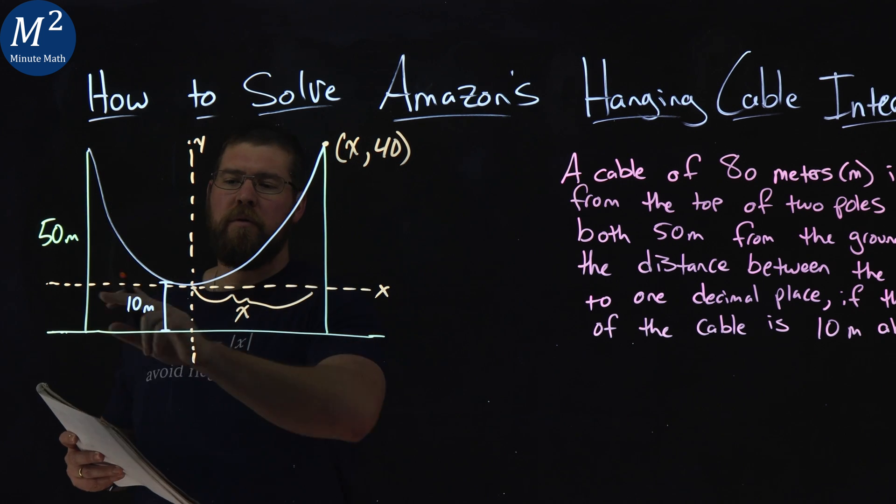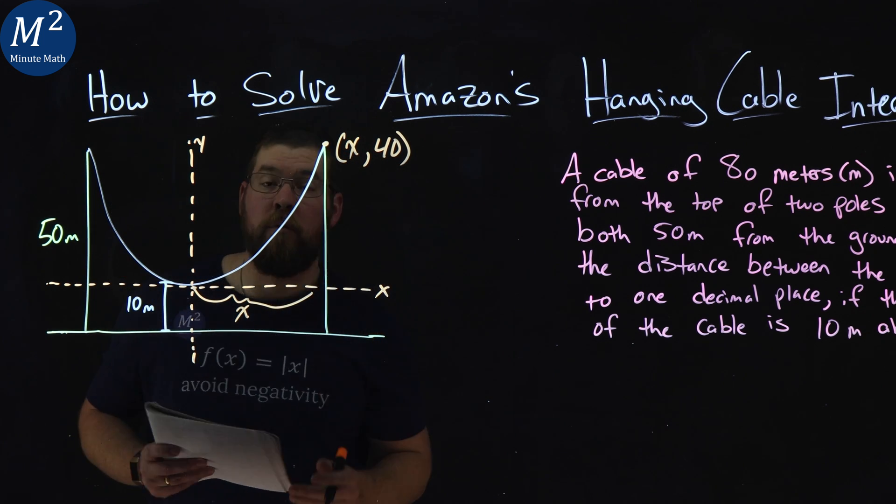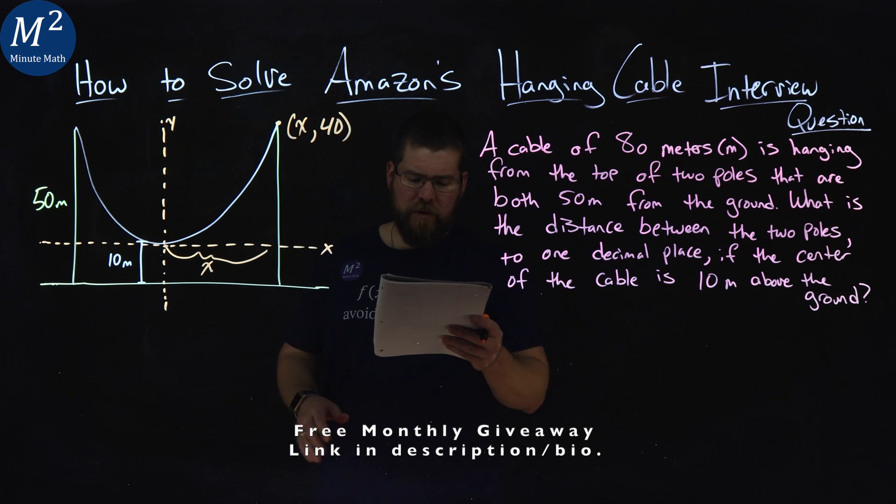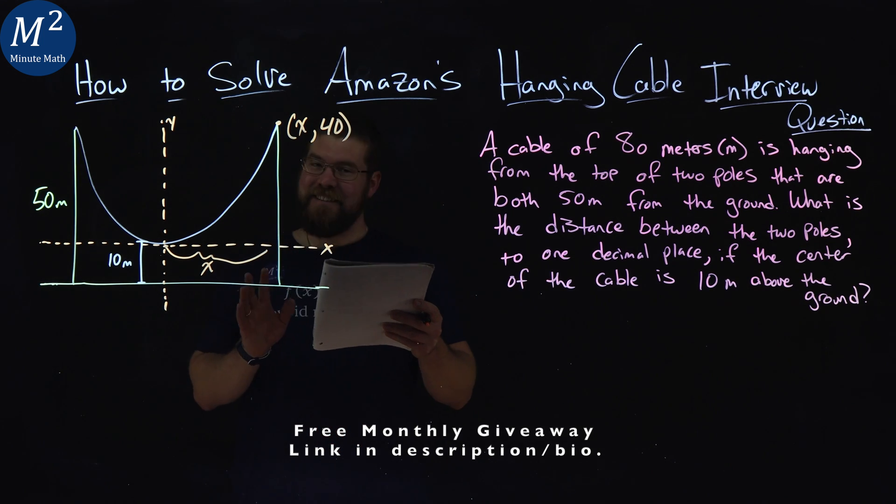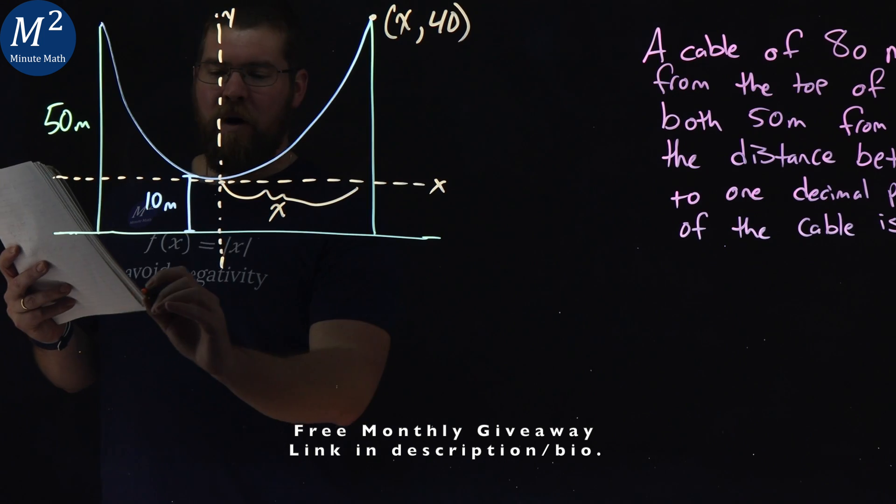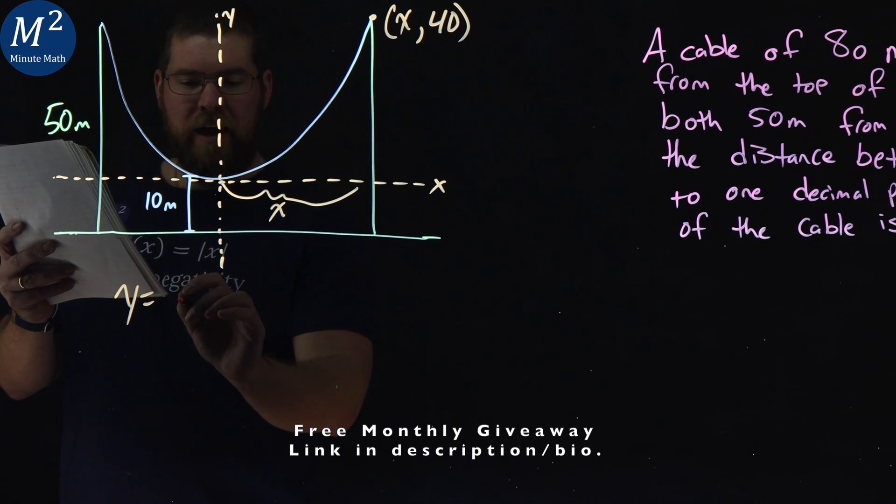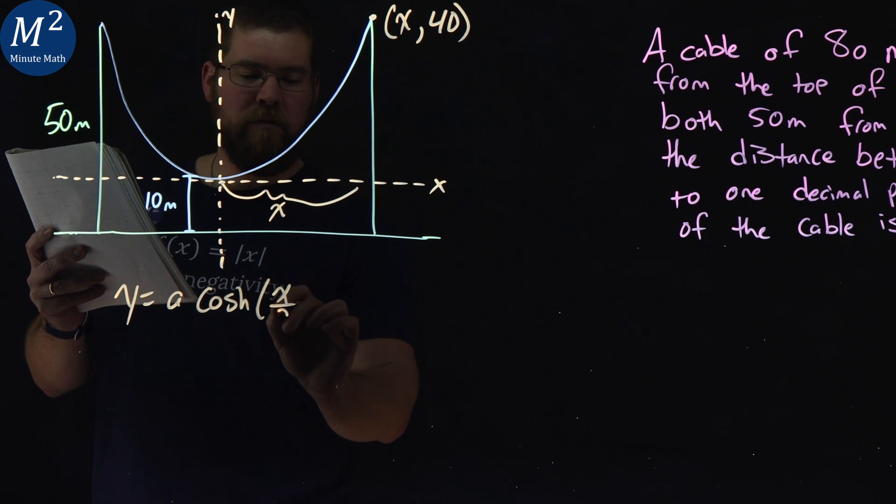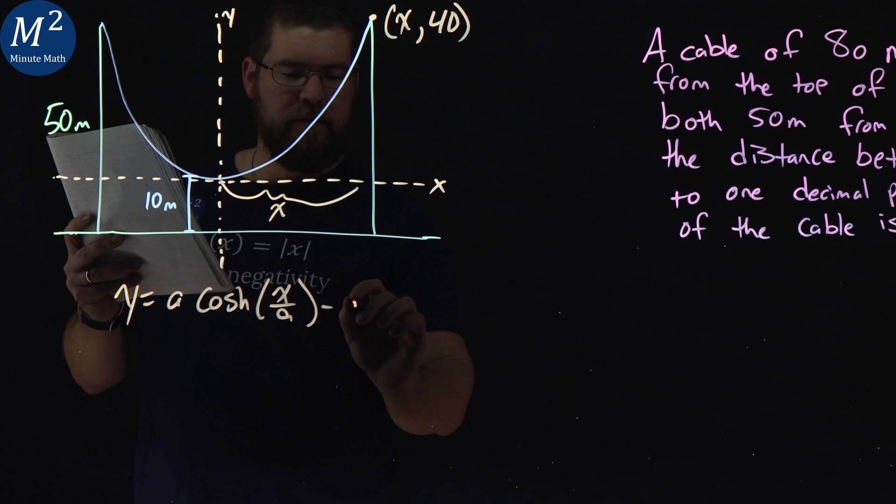And we know the height here is going to be x, a height of 40. Remember, 50 meters is the whole thing. Subtract 10 gives us a height of 40 from our coordinate plane. And the equation that's going to help us here, the general catenary equation is this: y equals a cosh of x over a minus a.